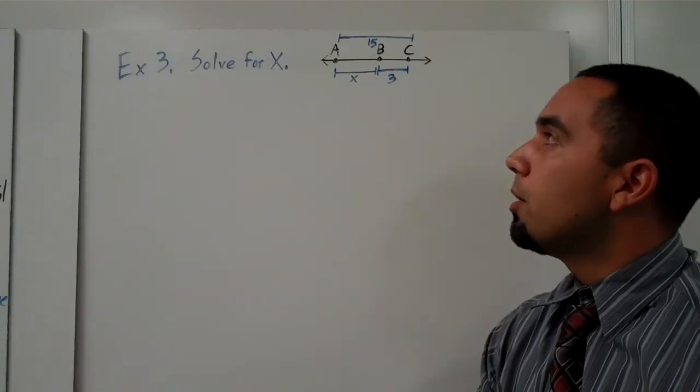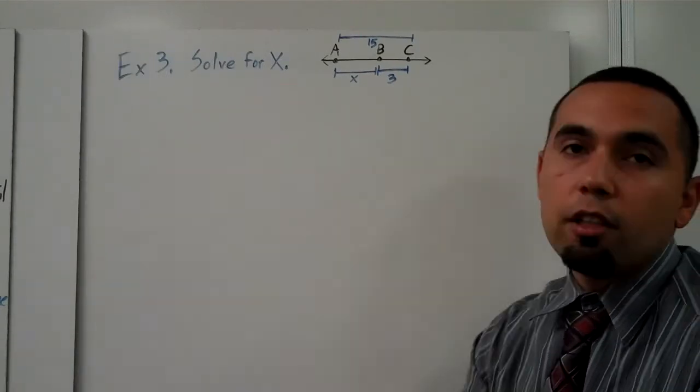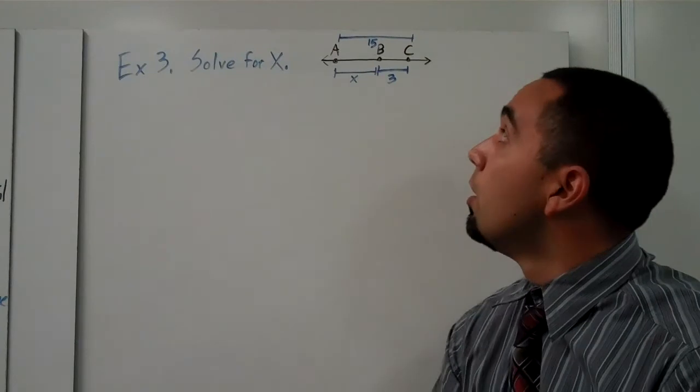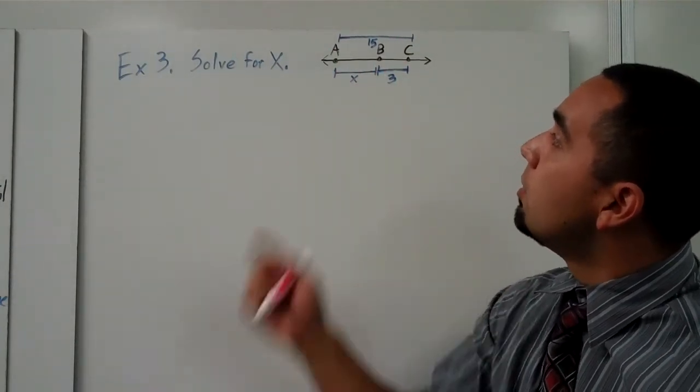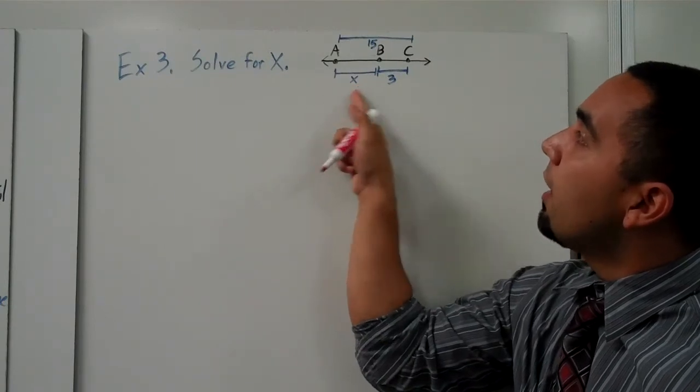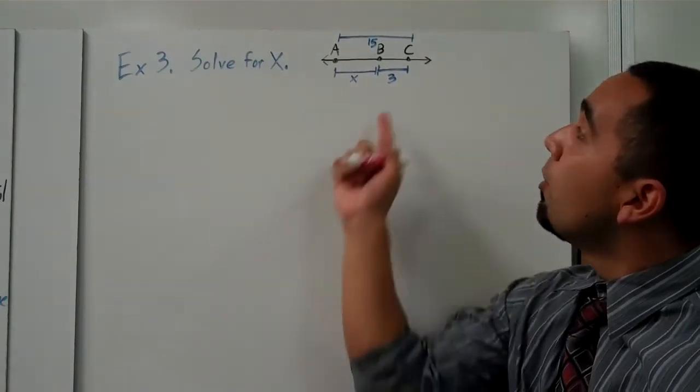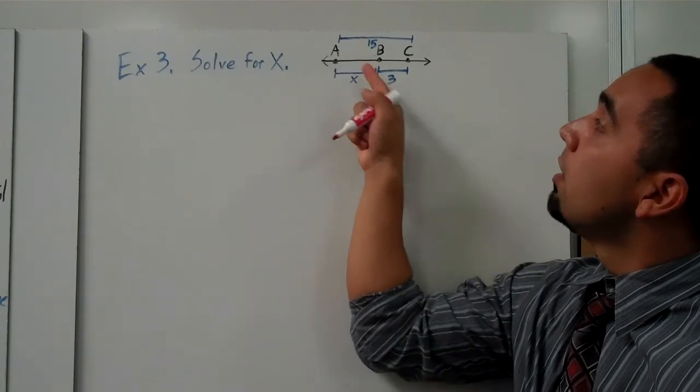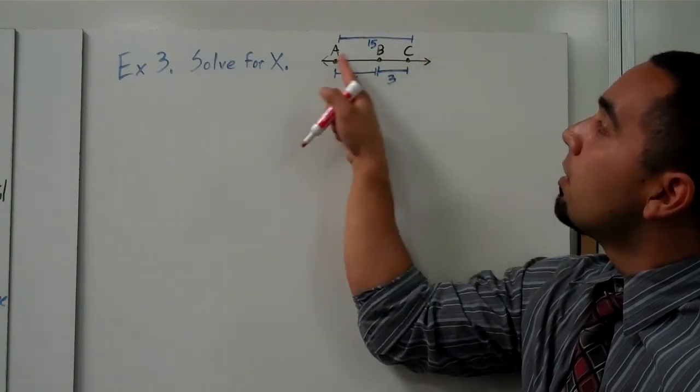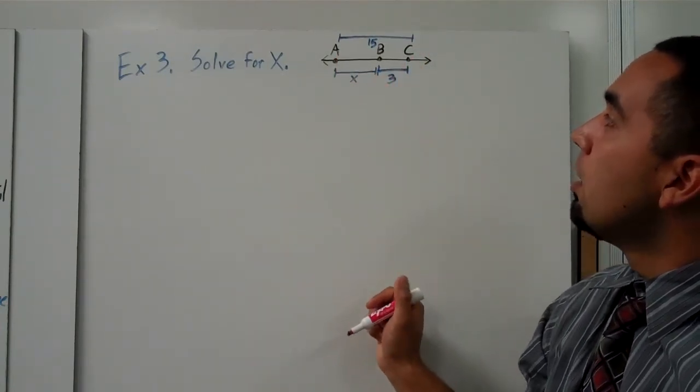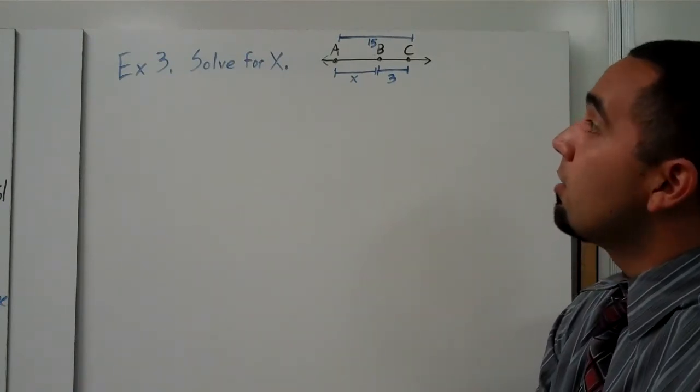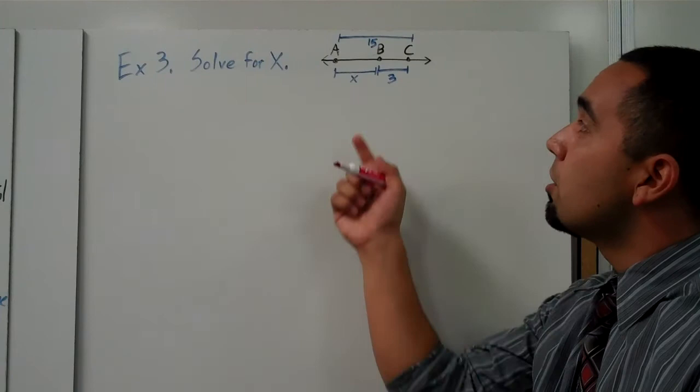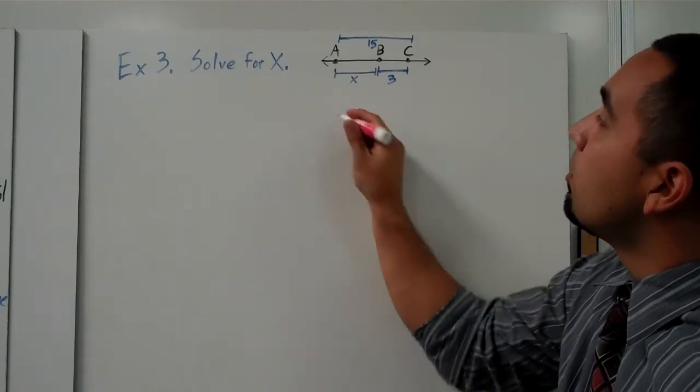And one final example, example number three. Now we're going to deal with a little bit of algebra. A, B, and C - it says solve for X. Well, here's our X, it's the length AB, and we know that BC is 3 and we know that the whole length AC is 15. So I'm going to set it up as an algebra equation and I'm going to say, based on the segment addition postulate, that this segment plus this segment should be equal to the whole thing, which is 15.